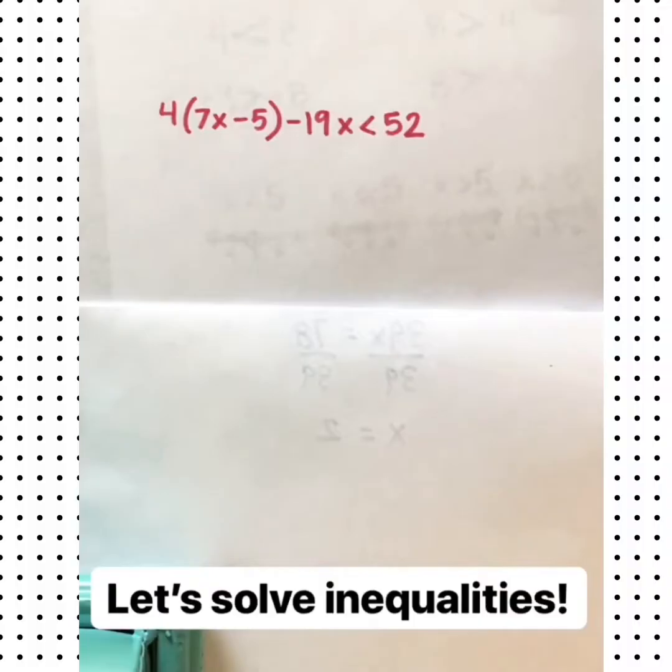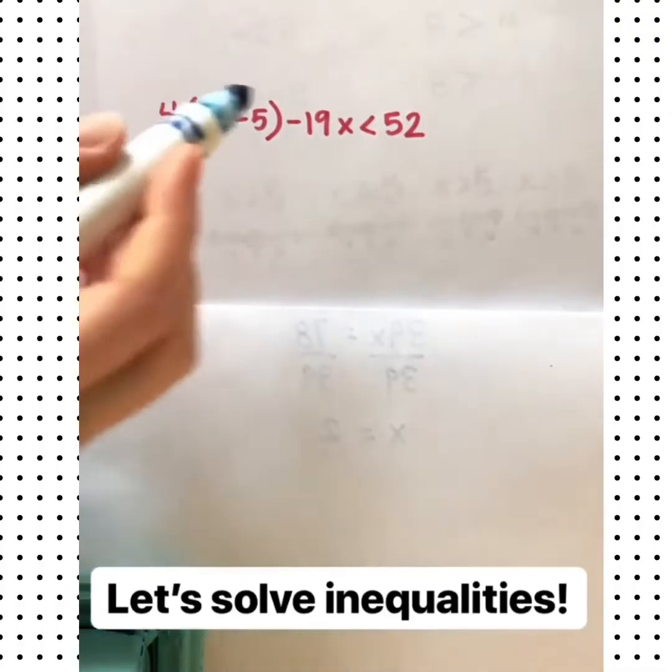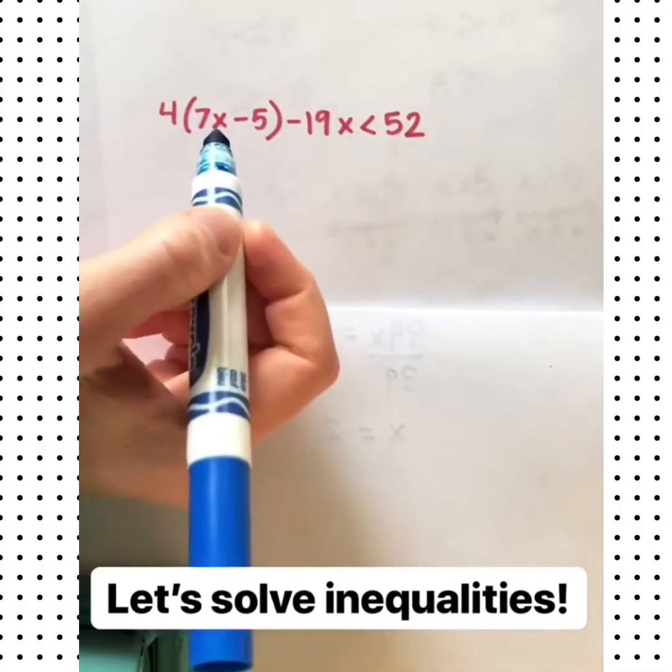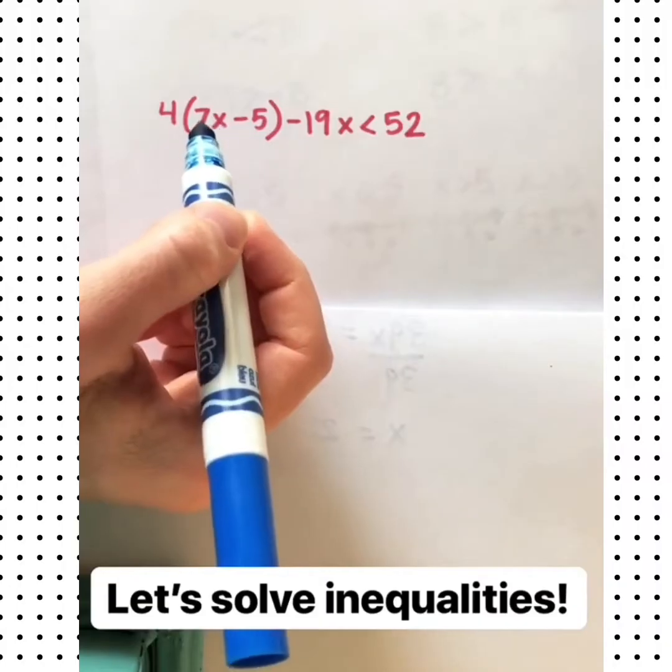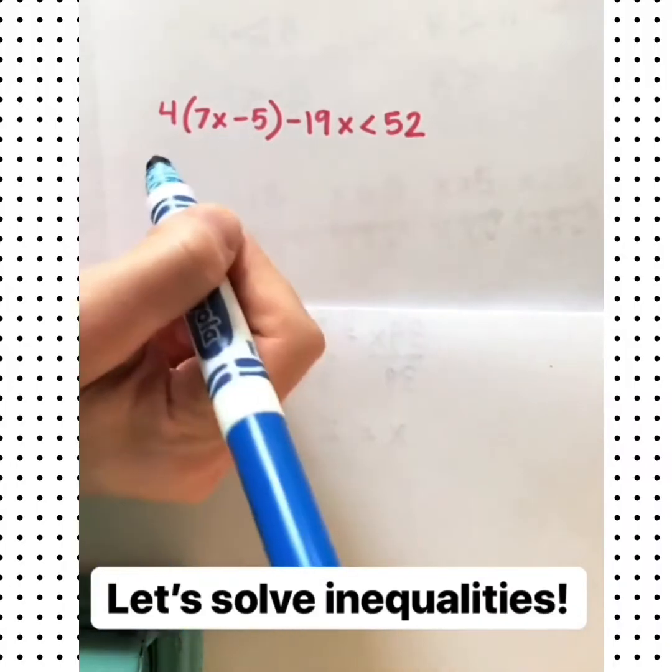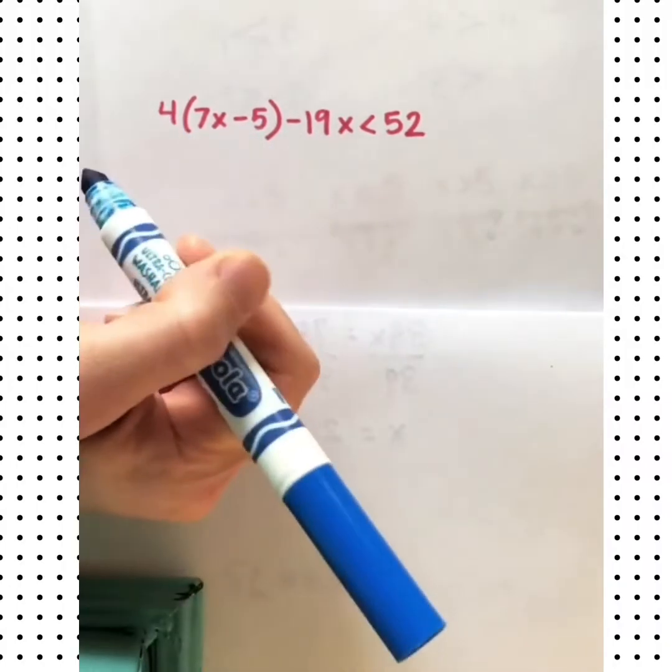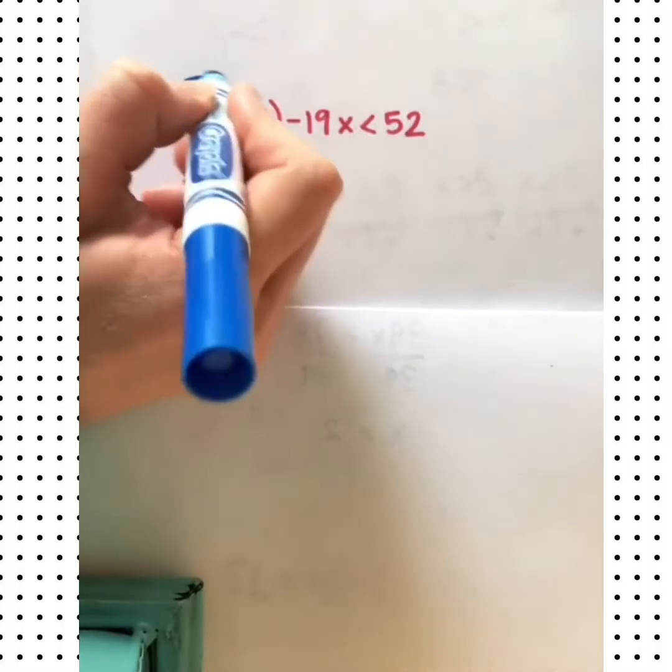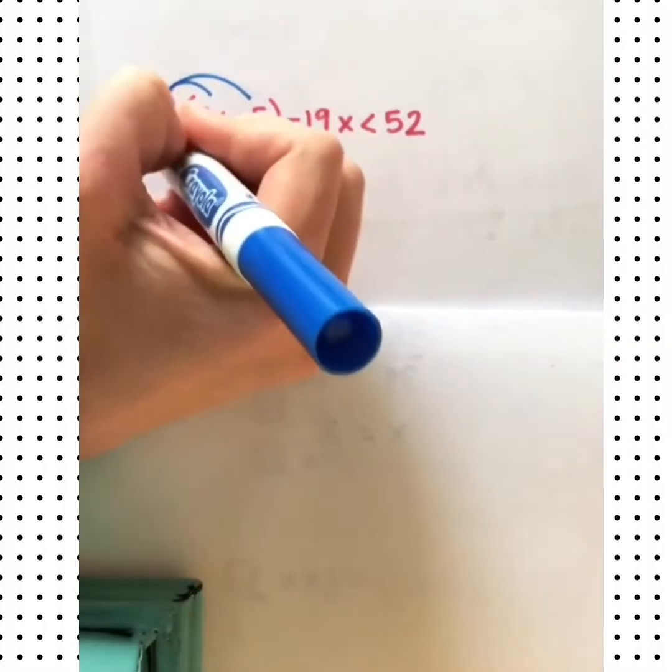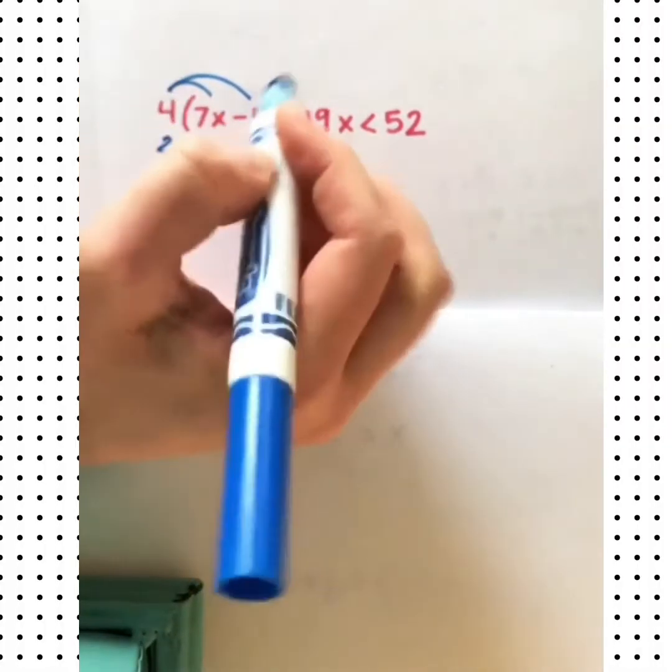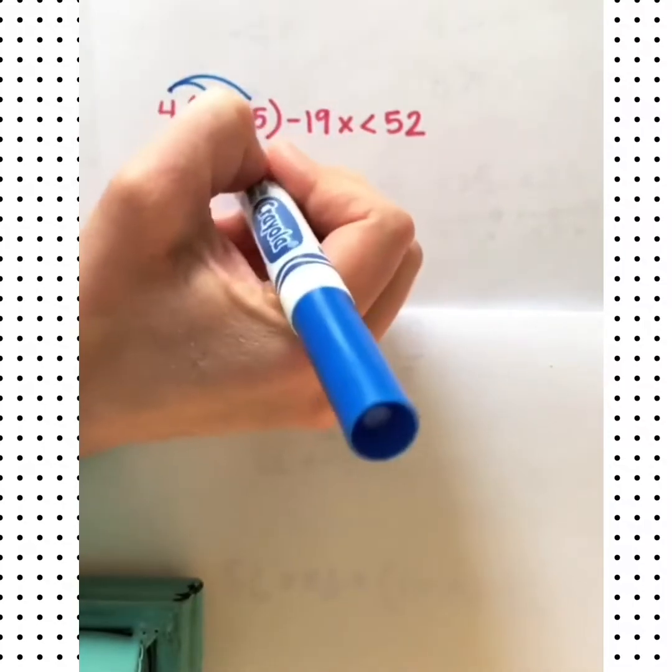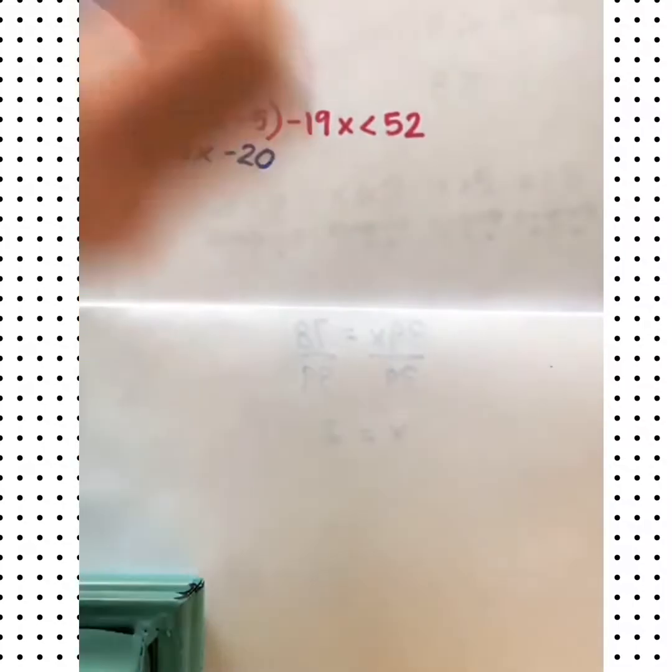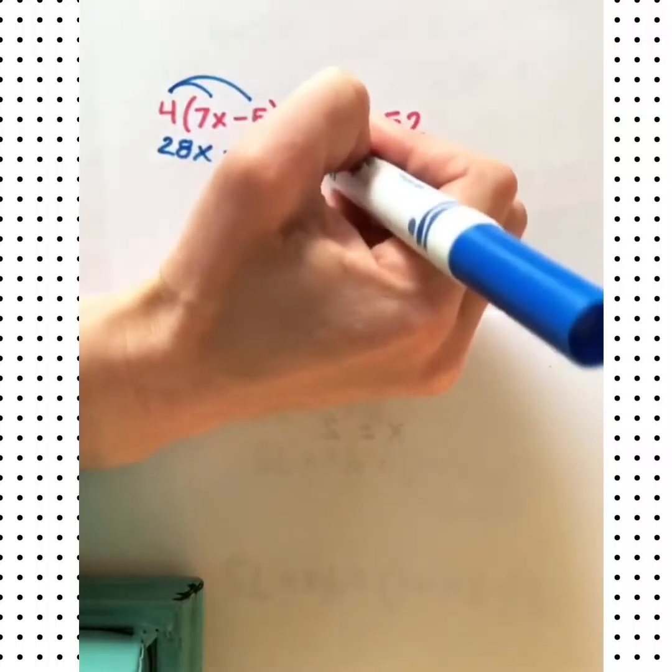So how do we solve inequalities? They are very similar to how you would solve an equation. There's one important exception that I'll show you in just a minute. But let's look at one that works out pretty similar to how a regular equation would be worked out. We'll look for any kind of distributing that needs to happen. Then 4 times 7x gives us 28x. 4 times a negative 5 gives us a negative 20. We'll bring down the rest of the inequality.